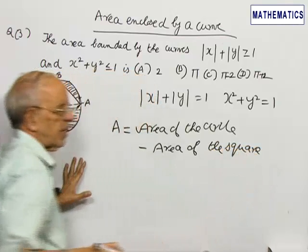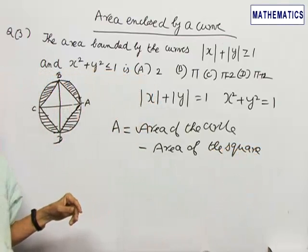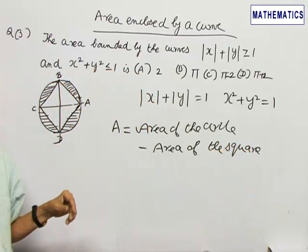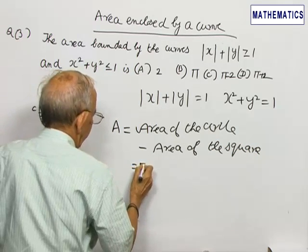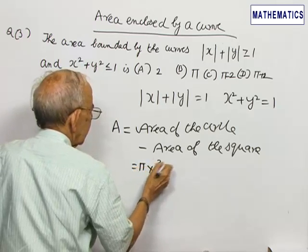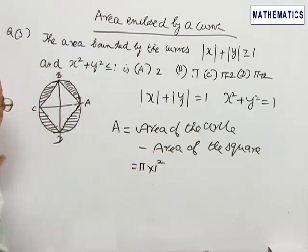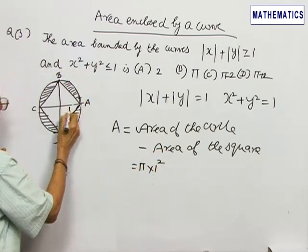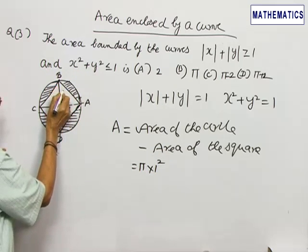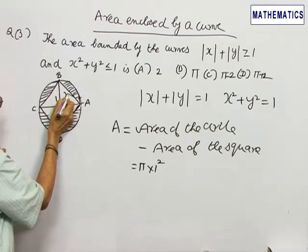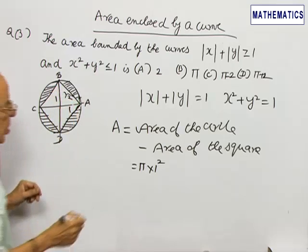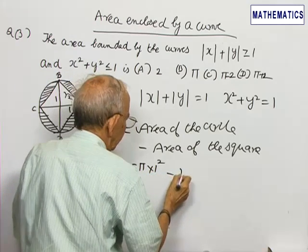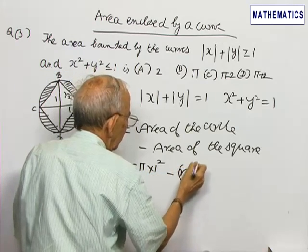The circle has radius 1, so area = πr² = π(1)² = π. The square has vertices at distance 1 from the origin, so the side length is √2. Area of the square is (√2)² = 2, giving us π - 2.